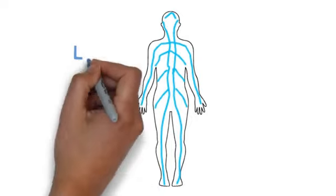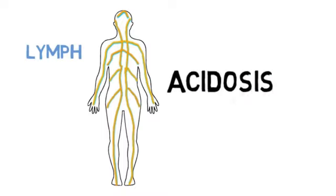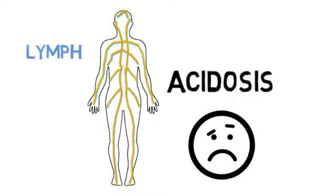Lymph is our sewer system and it surrounds every cell. When it backs up, it turns to acid. This is called acidosis and it's the cause of most of man's suffering, everything from canker sores to cancer.